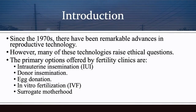Since the 1970s there have been remarkable advances in reproductive technology; however, many of these technologies raise ethical questions. Just because we have the technology doesn't mean it's okay to do some of these things. The primary options offered by fertility clinics are intrauterine insemination (IUI), donor insemination, egg donation, in vitro fertilization, and surrogate motherhood.